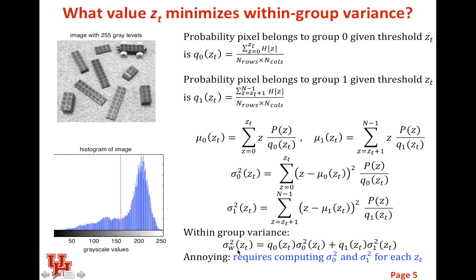All we have to do is compute that. But the problem with this one that makes it slightly annoying is that we have to compute Q0 as a function of Zt for every value of Zt, and Q1, sigma 1 squared for every value of Zt. It would be nice if we had some format where we didn't have to recompute those each time. And that's what today's lecture is about.